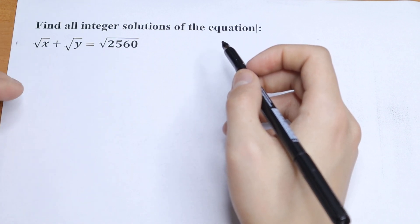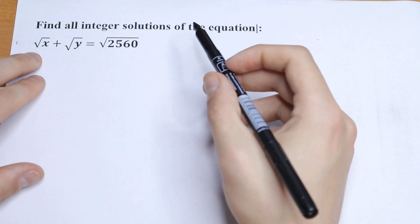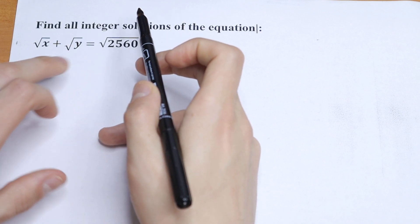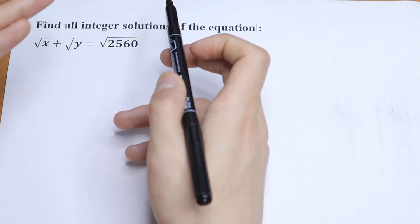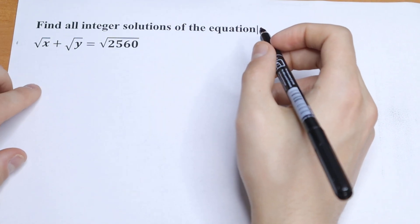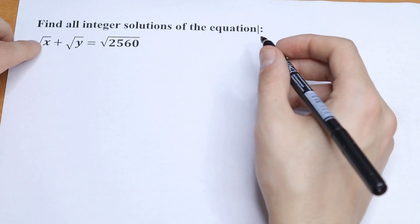How can you solve it? On the first side, this equation is really hard, because we have two variables — x and y — and moreover, we have square roots. But we can solve it. I want to suggest a really good trick for how to solve it.